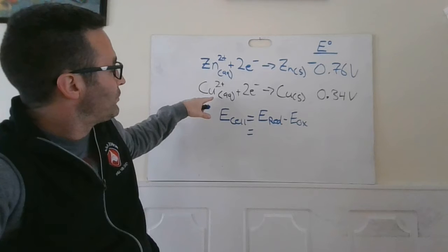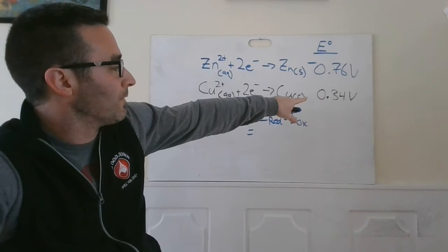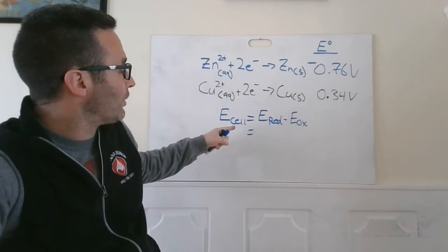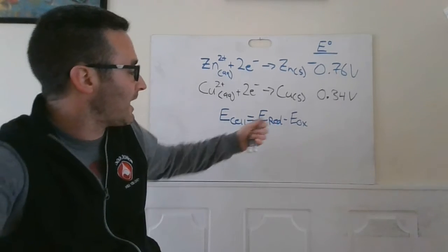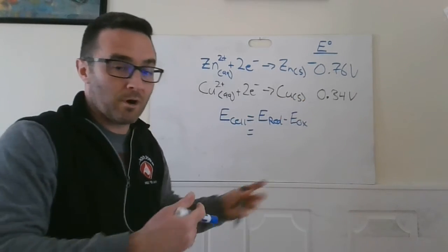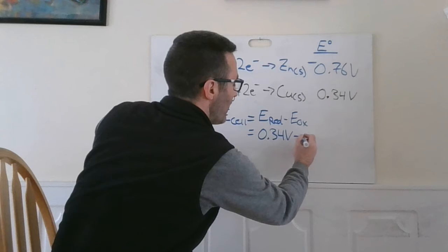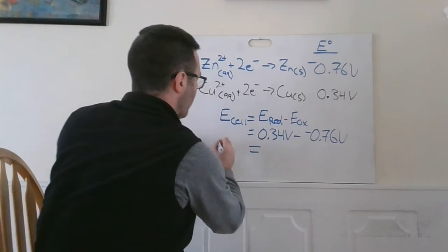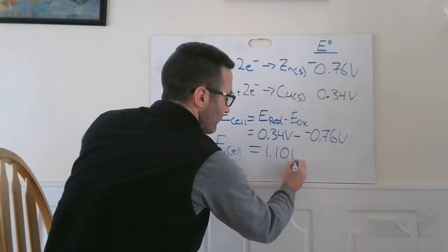So copper 2+ taking on 2 electrons going to the solid has a reduction potential of a positive 0.34 volts. That is actually electrochemically likely to happen. So if you look at your reaction as being your potential for the cell being the reduction reaction minus the oxidation, well, copper sort of wants to get reduced. So 0.34 volts minus a negative 0.76 volts would tell you that the potential for this cell would be 1.10 volts.